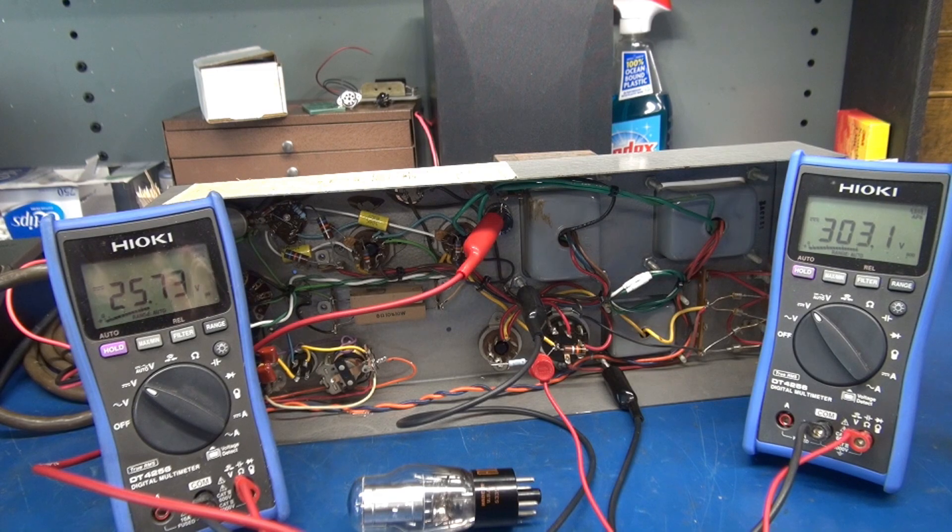So I believe this is a simple solution to bring the screens and cathode voltages into spec and protect your 6550 tubes from running too hot.